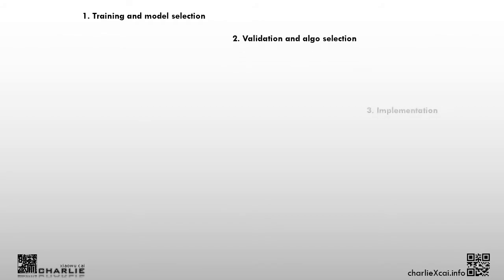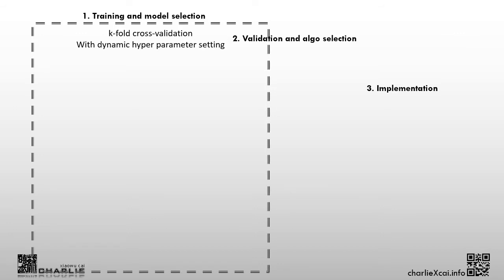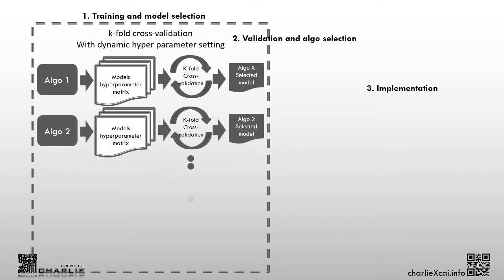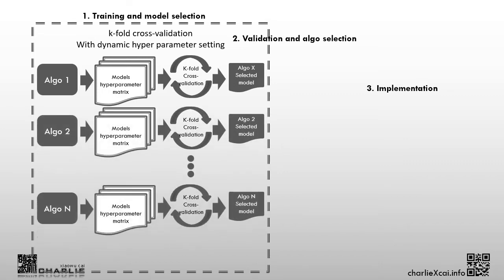Our machine learning research design consists of three key steps. First, it is training and model selection. In the training stage, we use an AutoML approach with hyperparameter optimization. The models are trained and selected through a K-fold validation process. We do this training and model selection for each algorithm, and at the end of this first step, we will have the best model for each algorithm.